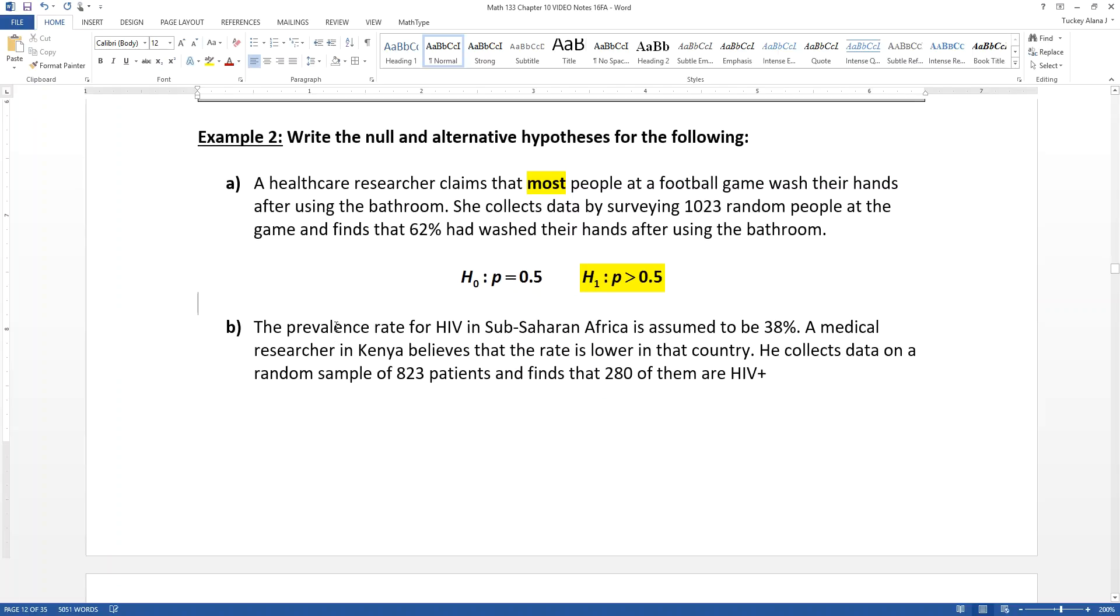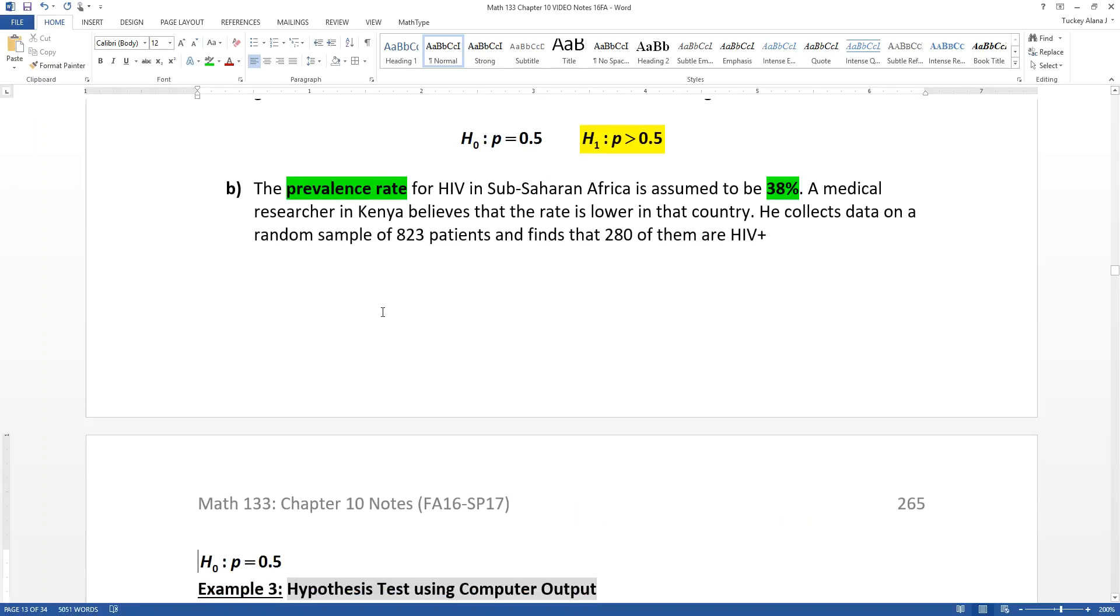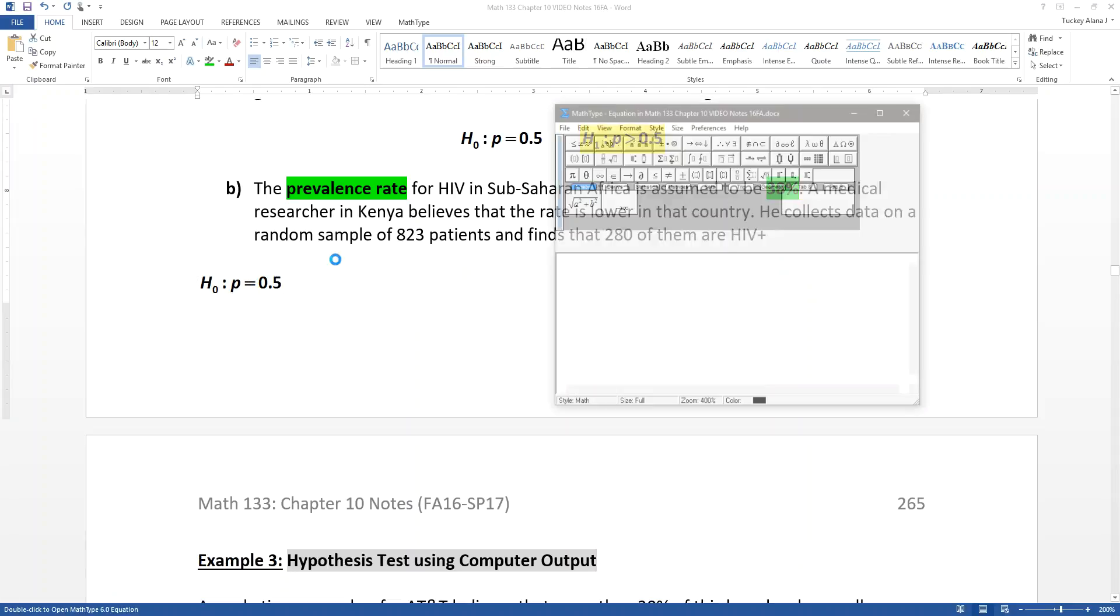For sub-Saharan Africa, the prevalence rate, that word is cuing in that you're talking about proportions. So the prevalence rate is a proportion and it's assumed to be 38% right here. So the prevalence rate of HIV is assumed to be 38%. So what they're telling you is that your null hypothesis is equal to P equals 0.38.